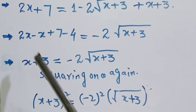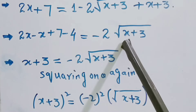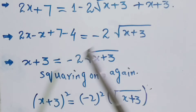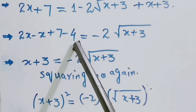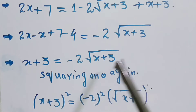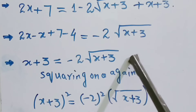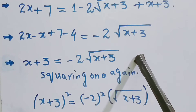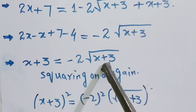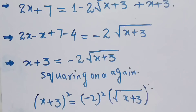So we have x + 3, then x plus 3 minus x means: x + 3 equals minus 2 root of (x + 3). Rearranging: x + 3 equals negative 2 root of (x + 3). We square both sides again: (x + 3) whole square equals 4 times (x + 3).